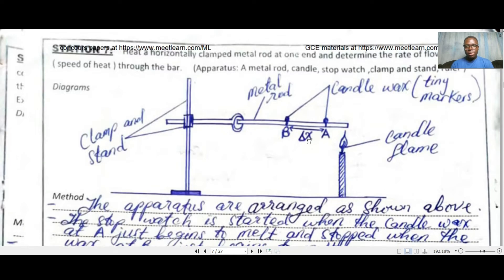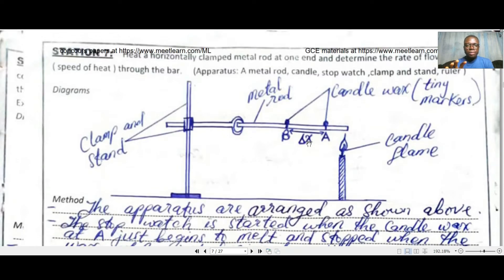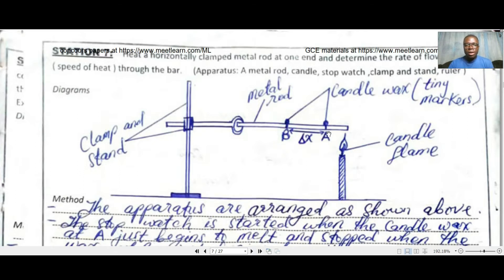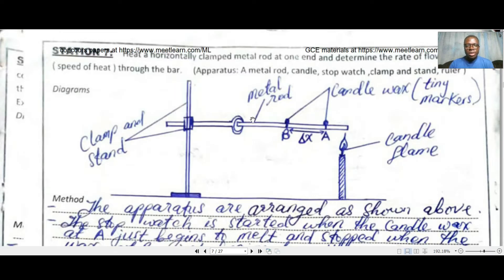Here is the setup of the experiment. You have to set up your experiment to look exactly like this. The method shows Point A and Point B, with the distance between them represented as delta x. We have a metal rod on a clamp and stand, and we are going to use candle wax as markers, with a candle flame as the heat source.